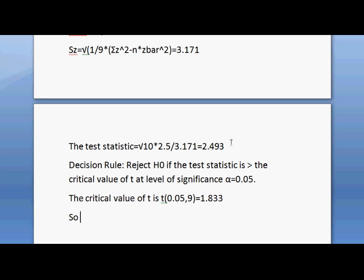We can see that 2.493 is greater than 1.833. So we will reject the null hypothesis by the decision rule.